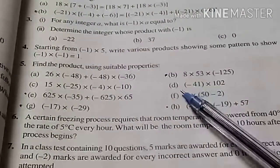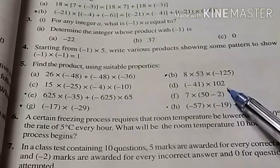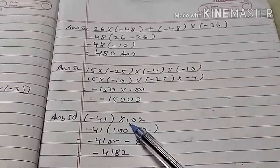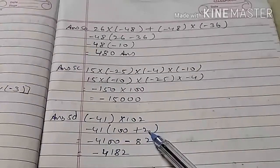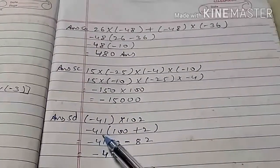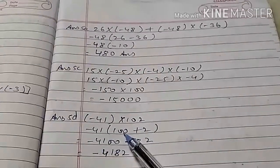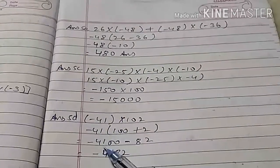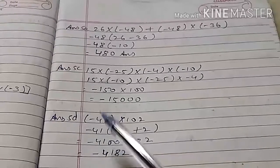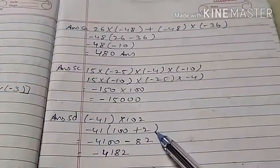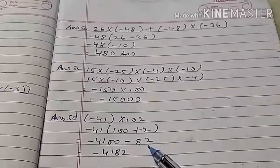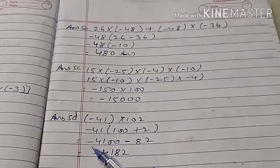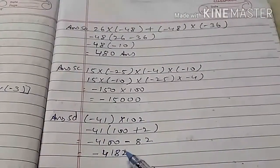Question 5D: minus 41 multiply 102. We break 102 as 100 plus 2, then take minus 41 as common and write minus 41 multiply (100 plus 2). Minus 41 multiply 100 gives minus 4,100 and minus 41 multiply 2 gives minus 82. Both results are negative, so we add them to get minus 4,182.